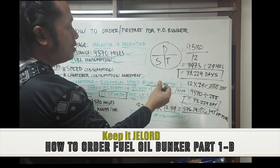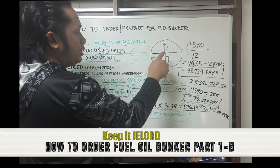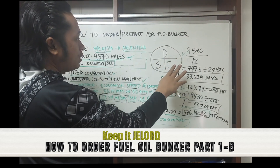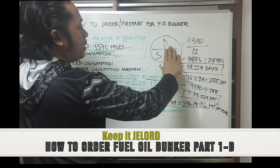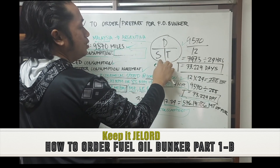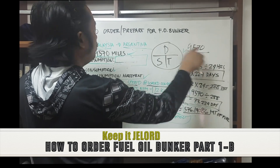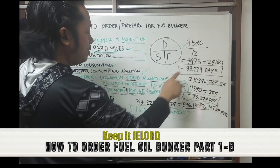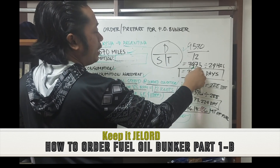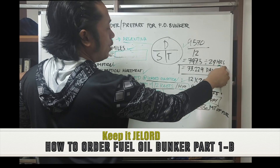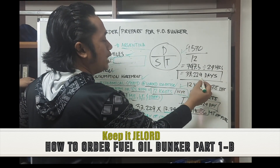Since we're looking for time (days), just cover the time variable, leaving distance divided by speed. So we calculate 9,570 divided by 12 knots, which gives 797.5, then divide by 24 hours to get the days. The result is 33.229 days of sailing from Malaysia to Argentina.